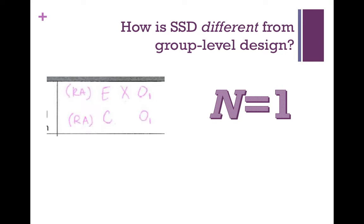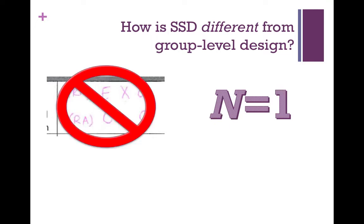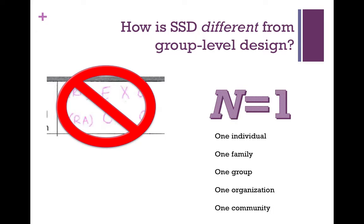Single systems design is a little different from group level designs. In Social Work 360, we focused mostly on group level designs — comparing two groups on a specific variable or the impact of an intervention on an outcome. In SSD, we don't compare two groups. Your N size for single systems design is always going to be one — one individual, one family or couple, one group, one organization, or one community. In SSD, your N size will always be one.